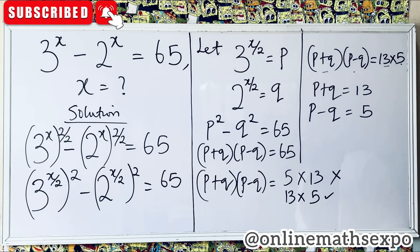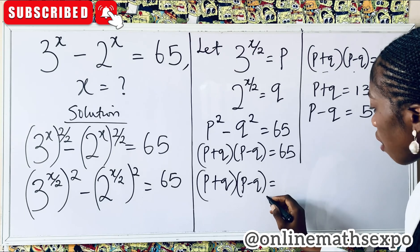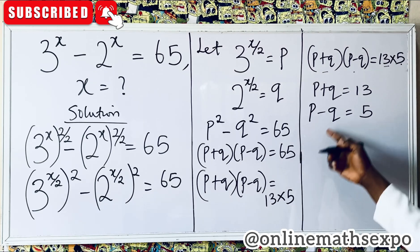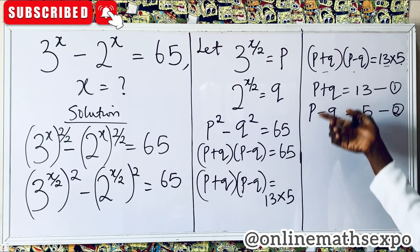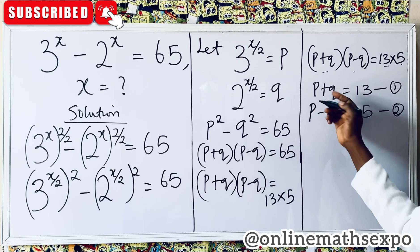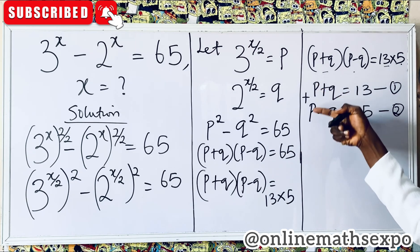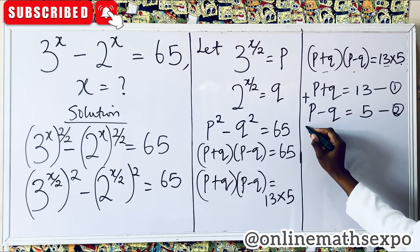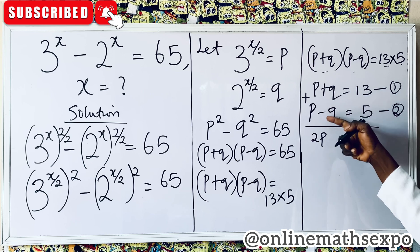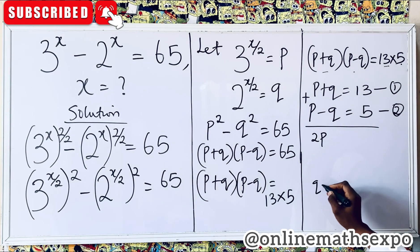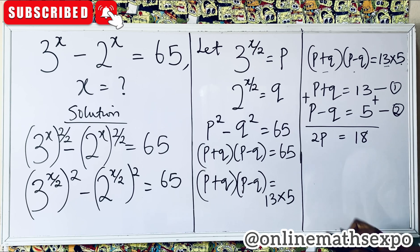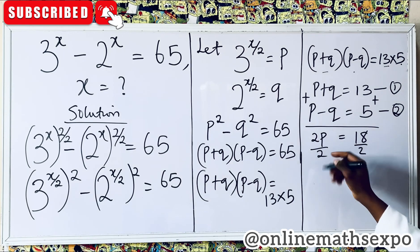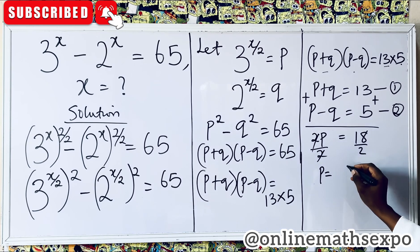This has led us to a system of equations, just as we said at the beginning. We have p plus q equals 13 and p minus q equals 5. To solve for p, add the two equations together: p plus p gives 2p, and q minus q cancels out, while 13 plus 5 gives 18. Dividing by 2, we get p equals 9.